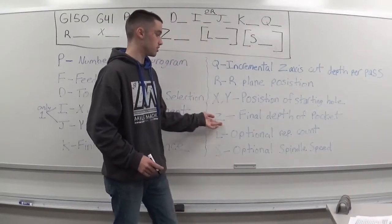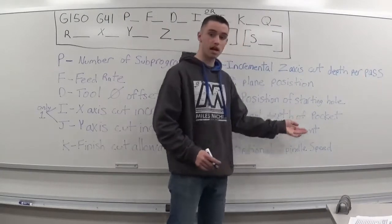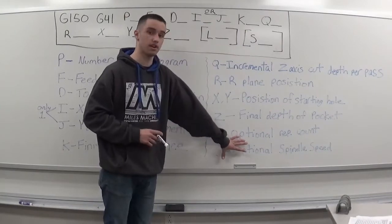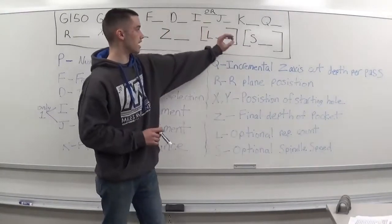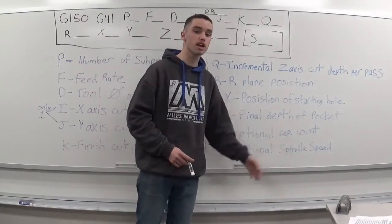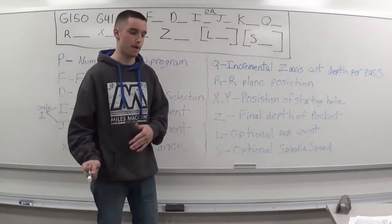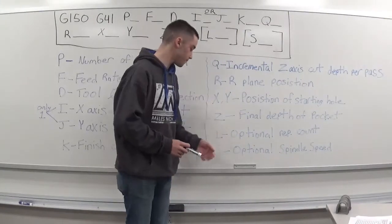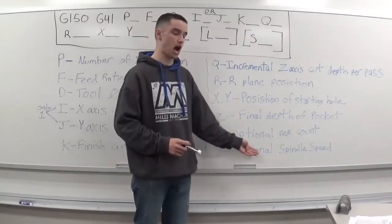Your Z is your final depth of the pocket. Then you have your L and your S, and these are very optional. That's why I have them in the little brackets up here. L is your optional repetition count, so if you have more than one pocket that you're doing, you can use the L and S, which is your optional spindle speed.